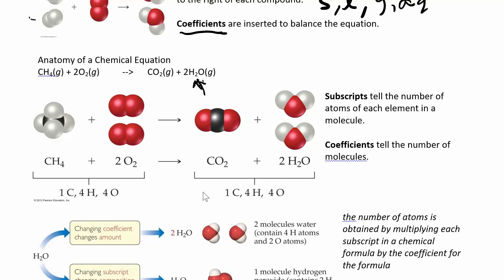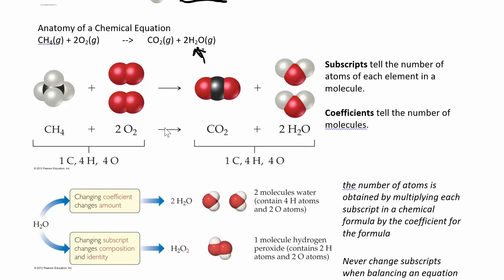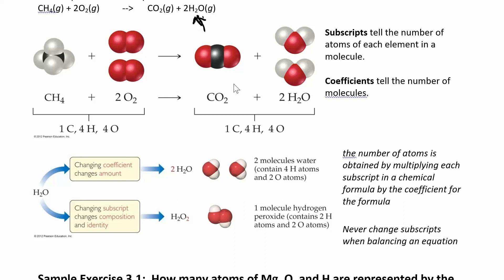In a balanced equation, the number of each type of atom must be the same on both sides. Here I have one carbon atom on each side. I have four hydrogens on the left and four hydrogens on the right. Then I have four oxygens — shown in red — one, two, three, four on the left and one, two, three, four on the right. So this is a balanced equation — the same number of each type of atom on each side.